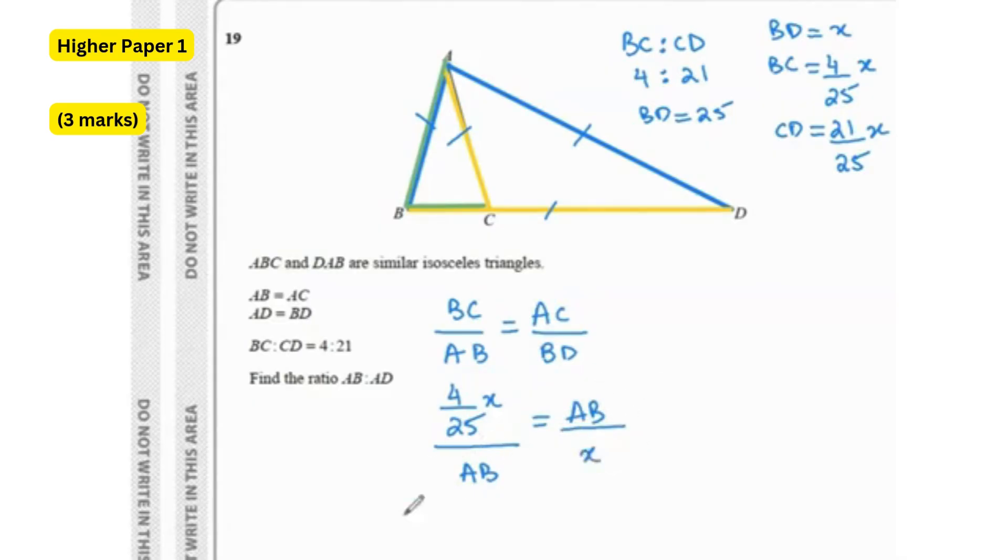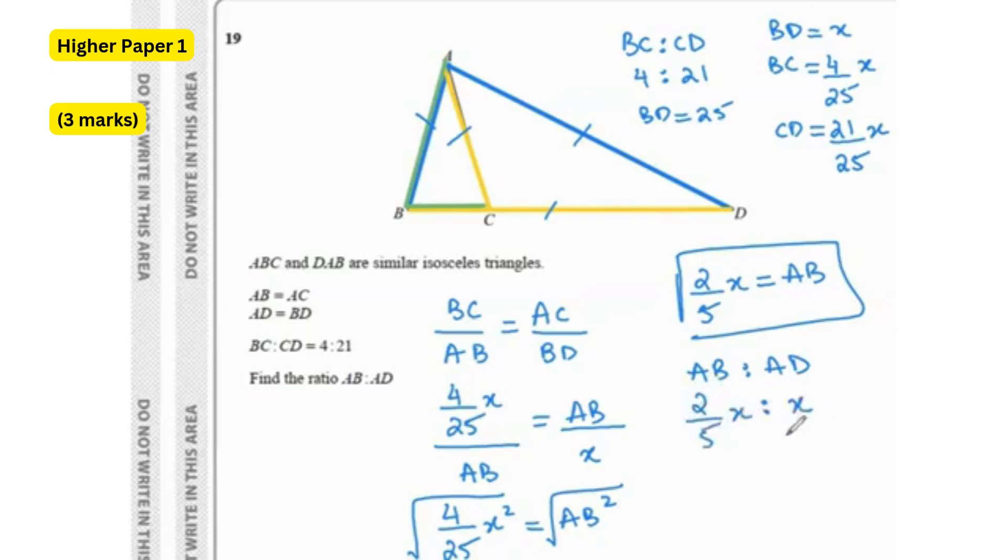So if you cross multiply, we have 4 over 25 X square equals to AB square. Take the square root on both sides. So we left it 2 over 5 X equals to AB. So we know what AB is. So AD is already the same as BD. So if we assume BD to be X, AD is also going to be X. So AB is to AD would be 2 fifths of X is to X. The X get cancelled out. We multiply both sides by 5. So 2 is to 5 is your ratio for AB is to AD.